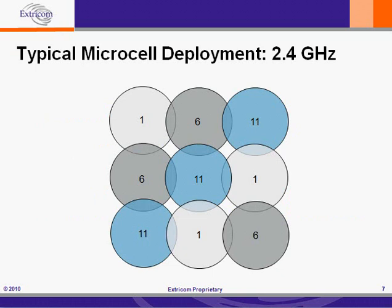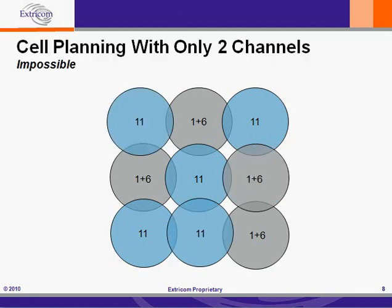This is a typical microcell deployment at 2.4 GHz with three distinct 20 MHz channels. If we do channel bonding, now we have cells running on the same channel adjacent to each other. We have two types of cells: the 1 plus 6 channel cells and the channel 11 cells, and they're adjacent all the way through our implementation. Co-channel interference, which is bad enough with three channels, would be even worse with only two. In fact, this kind of deployment simply would not work. So clearly, a microcell deployment in the 2.4 GHz band cannot use channel bonding.